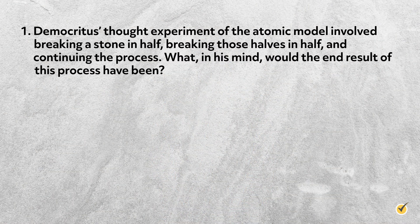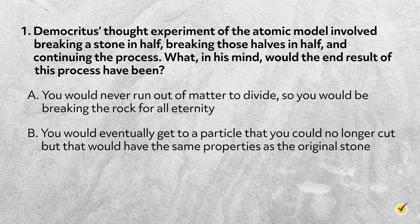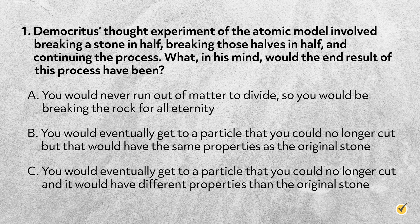Before we go, let's go over a few review questions to see what you remember. Number one: Democritus's thought experiment of the atomic model involved breaking a stone in half, breaking those halves in half, and continuing the process. What, in his mind, would the end result of this process have been? A: you would never run out of matter to divide, so you would be breaking the rock for all eternity. B: you would eventually get to a particle that you could no longer cut, but that would have the same properties as the original stone. Or C: you would eventually get to a particle that would have different properties than the original stone. The correct answer is B.